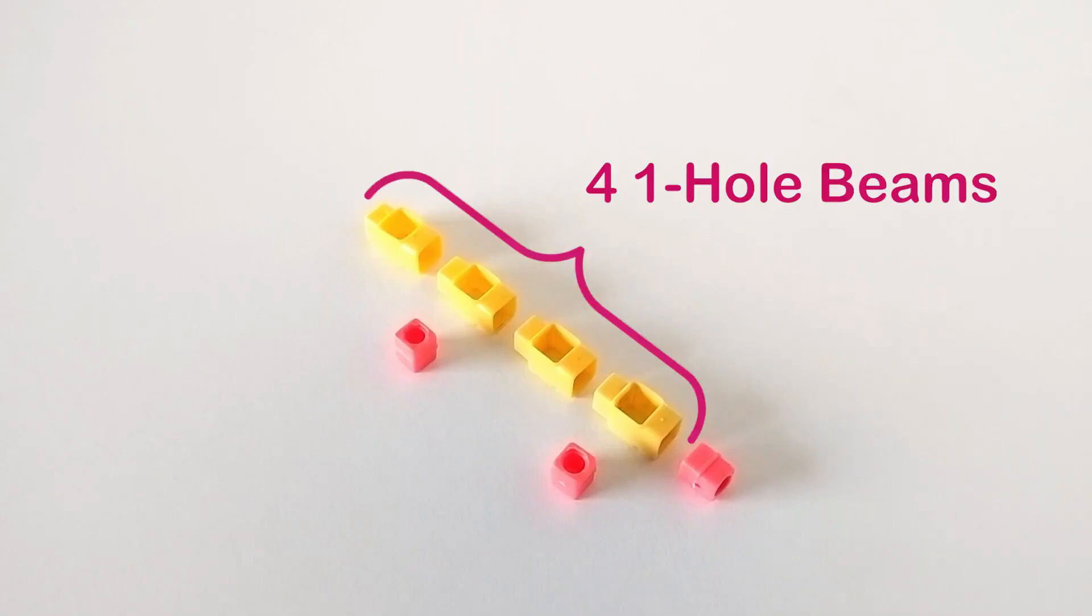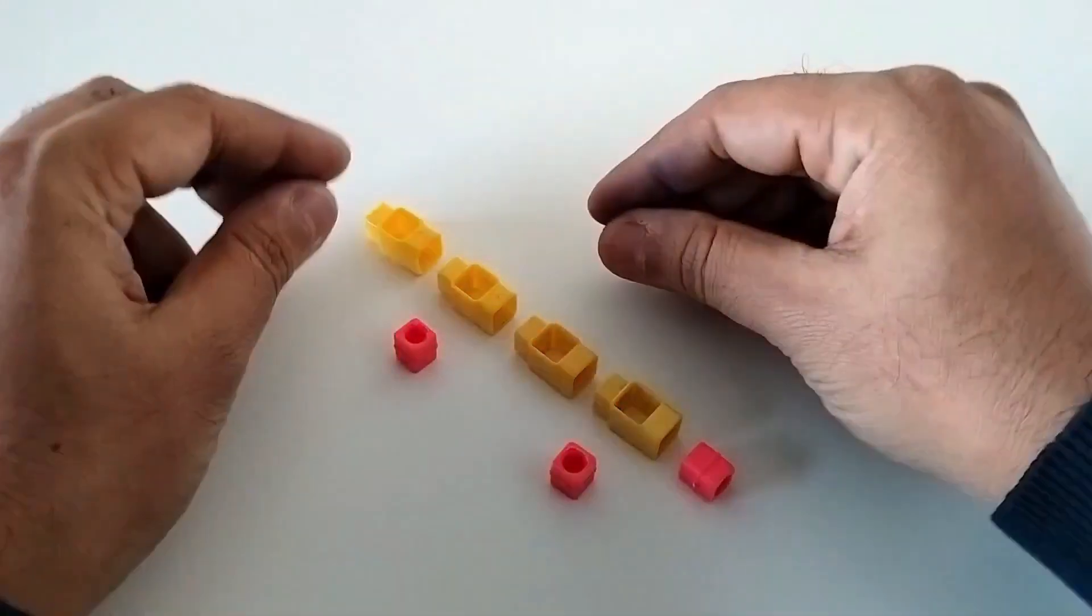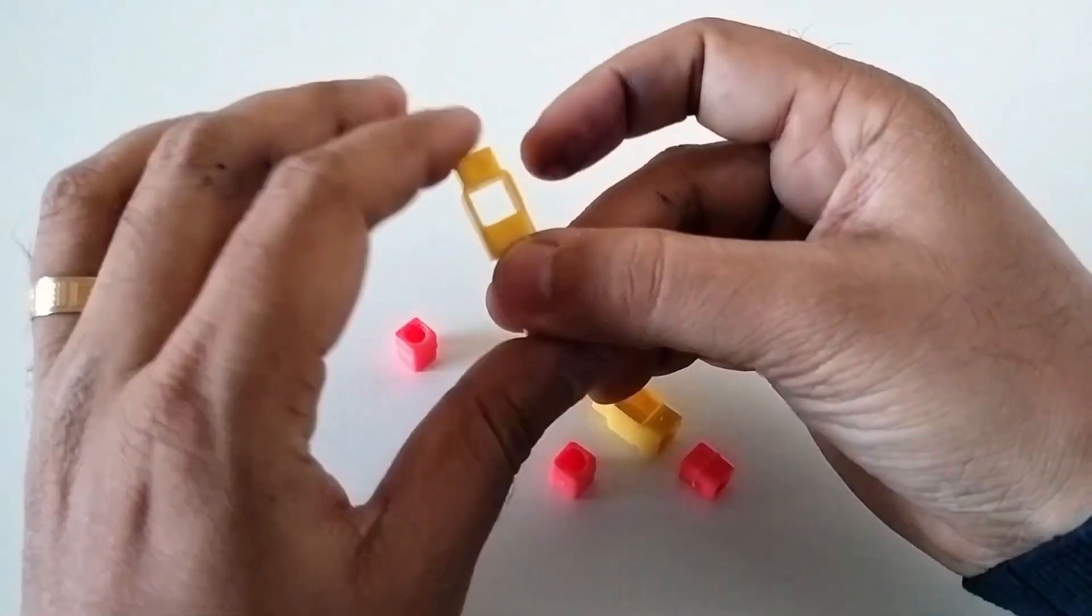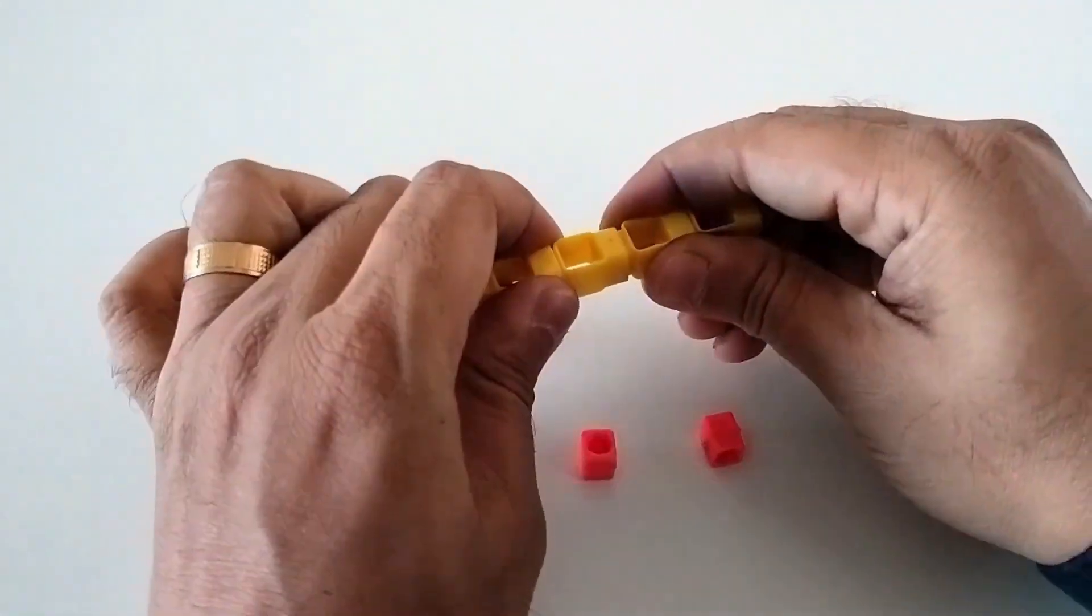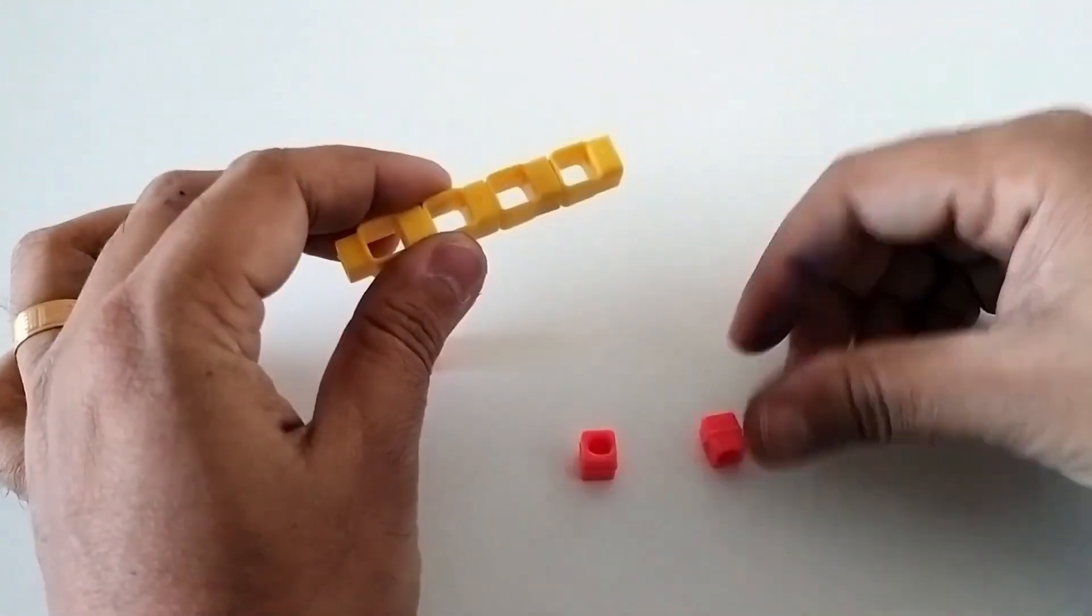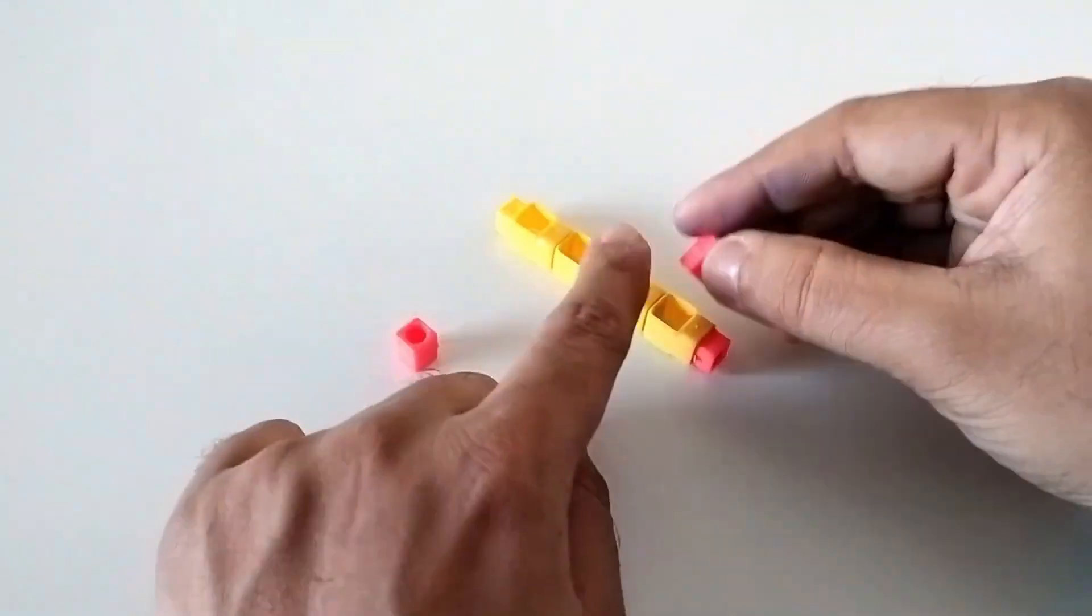First, take four one-hole beams and three male-to-male couplers. Join all four one-hole beams as shown. Then join one male-to-male coupler at the end of the beam. Now join both the remaining couplers as shown.